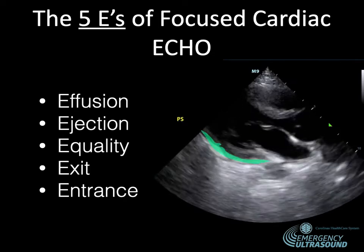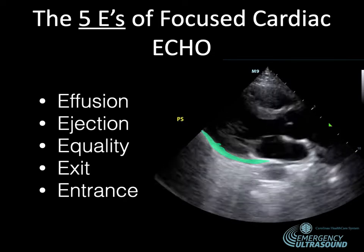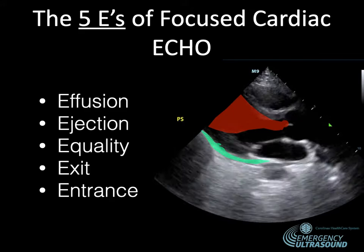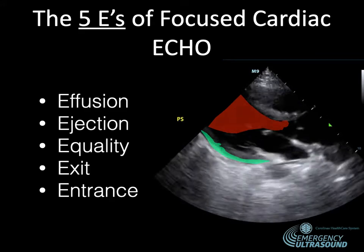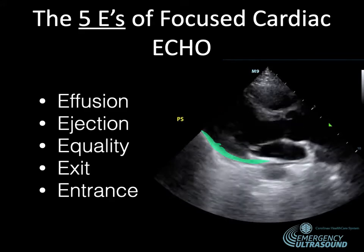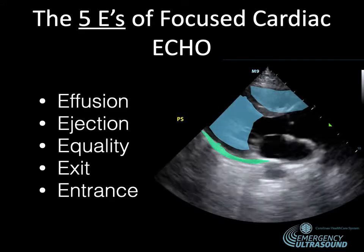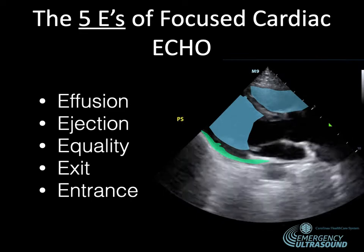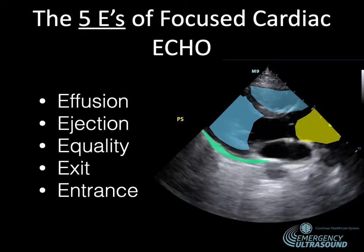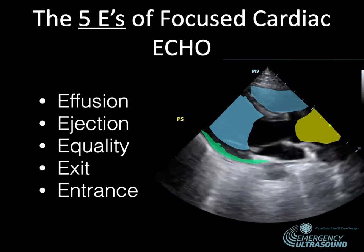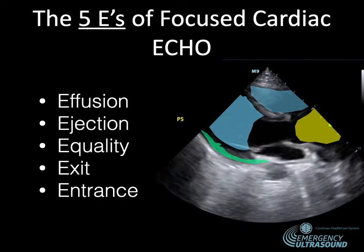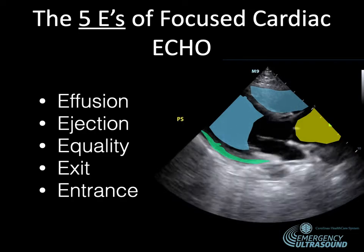Today we're going to talk about the five E's of focused echo. Looking for effusions, looking for the ejection, looking at equality between the right ventricle and the left ventricle, looking at the exit or the aortic outflow tract, and then the entrance — so the IVC.